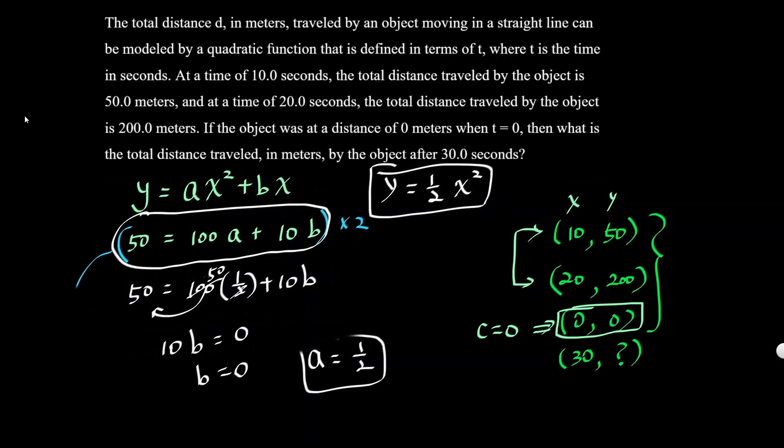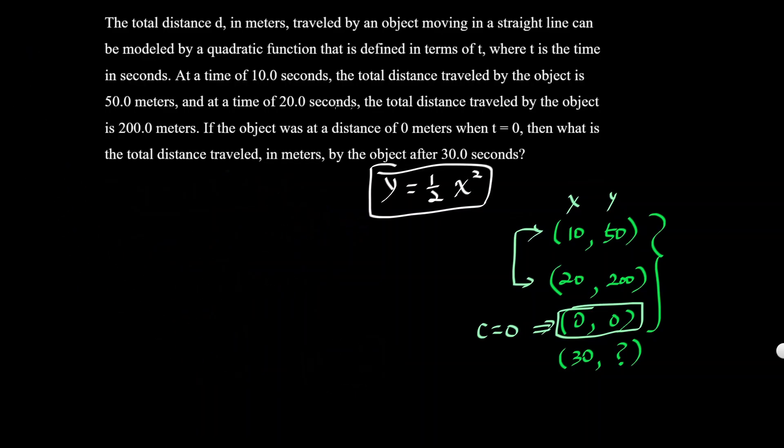So this is our function, where x represents the time. Now all you got to do is plug 30 in there. If you plug in 30, whatever the y value is, that's the total distance traveled. y = (1/2)(30²). 30 squared is 900, divided by 2 is 450. So the total distance traveled by 30 seconds will be 450 meters.